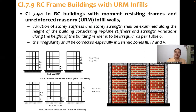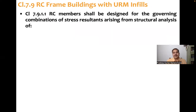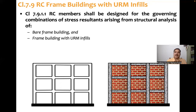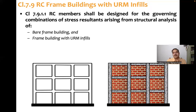Clause 7.9.1.1 states that RC members shall be designed for governing combinations of stress resultants arising from structural analysis of both the bare frame building and the frame building with URM infill walls. Initially the building behaves with wall action, then strut action, then frame action. Code suggests modeling the building as a bare frame and also with URM infills, computing stress resultants for both, and designing for whichever gives the most severe combination.